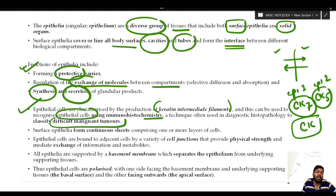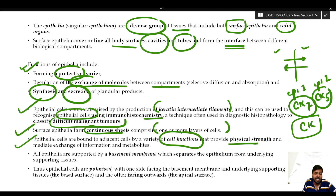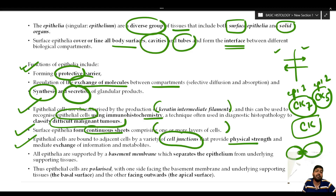Different kinds of cytokeratin antibody cocktails are available for classifying different kinds of epithelial malignancies. Surface epithelia form a continuous sheet comprising one or more layers of cells. Epithelial cells are bound to adjacent cells via a variety of cell junctions that provide physical strength and mediate the exchange of molecules between different compartments. We have already discussed cell junctions such as tight junctions, desmosomes, and hemidesmosomes in chapter one of Robbins.